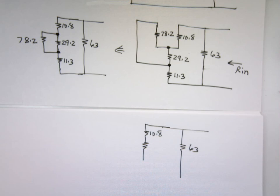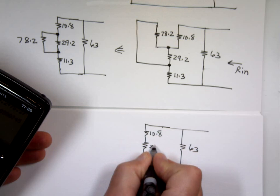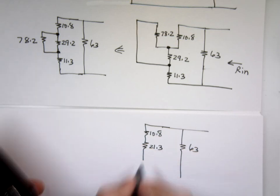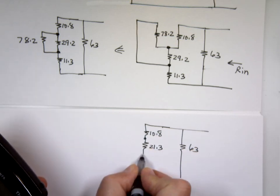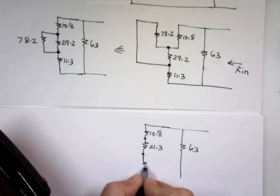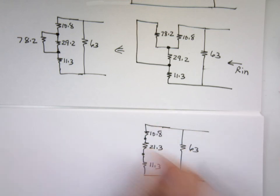It's always smaller than the lowest value. 21.3. Now these three, I can add them all together. 10.8 plus 21.3 plus 11.3, 43.4.